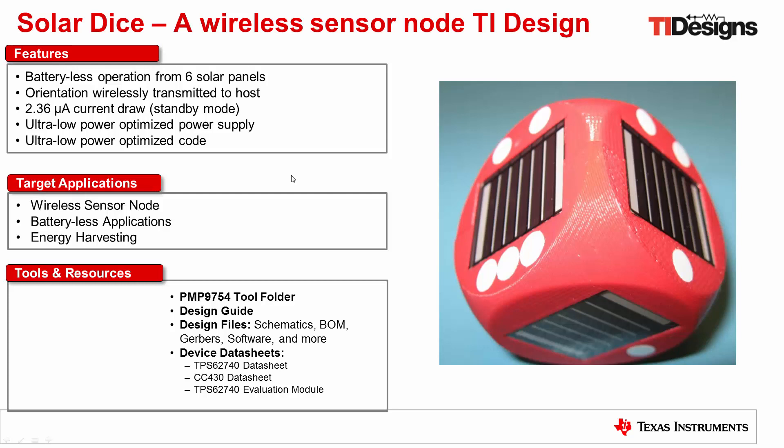Now this is an example of a wireless sensor node. You can measure anything with this, temperature, pressure, humidity, and so on. All of the design files are found on our reference design page, PMP9754.